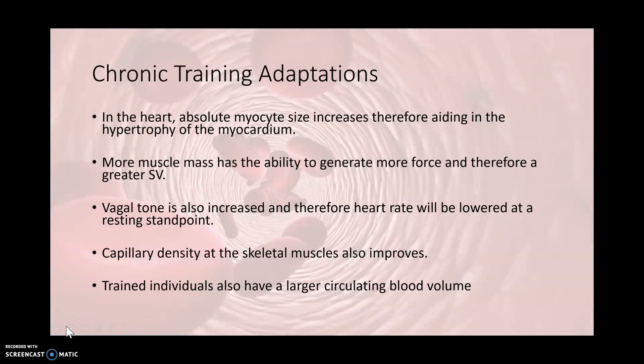Capillary density at the skeletal muscles also improves with chronic training. This enhances our diffusible surface area while decreasing diffusible distance, so the uptake of O2 is enhanced as well. Trained individuals also have a larger circulating blood volume.